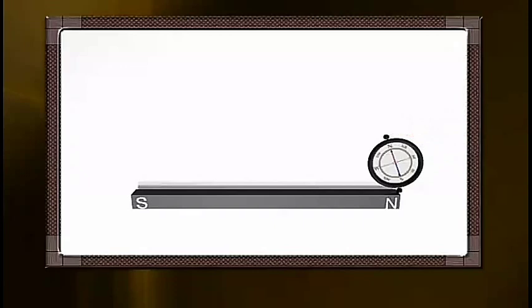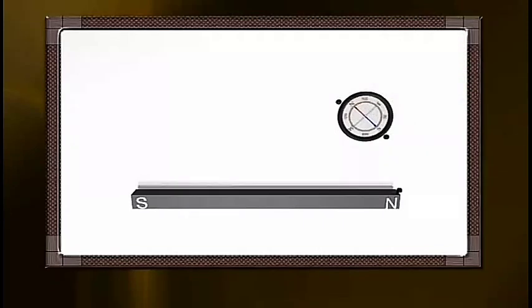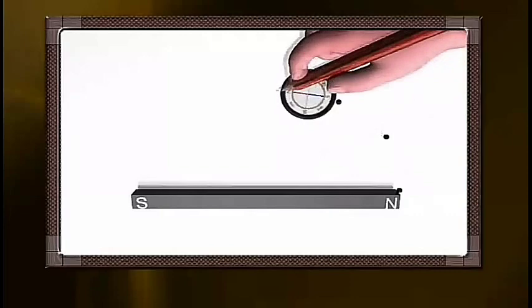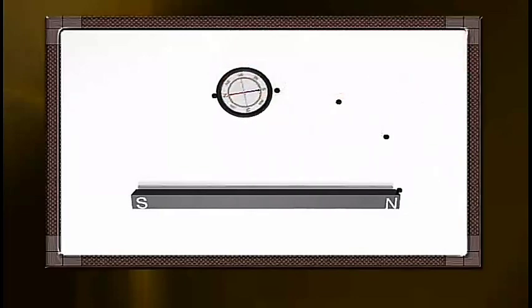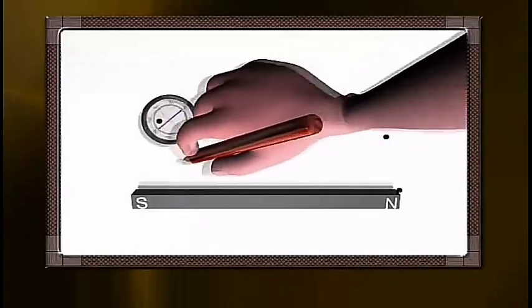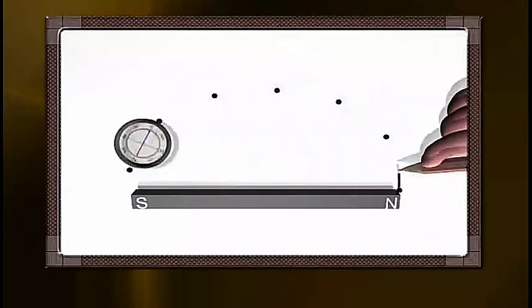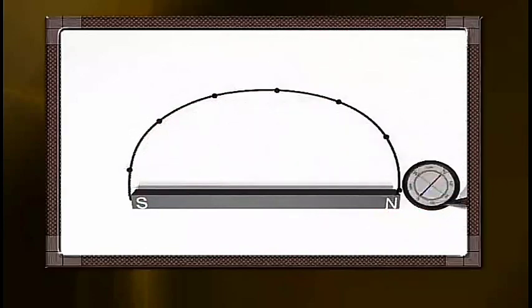Now, move the needle to a new position such that its south pole occupies the position previously occupied by its north pole. In this way, proceed step by step till you reach the south pole of the magnet. Then, join the points marked on the paper by a smooth curve which represents a field line.